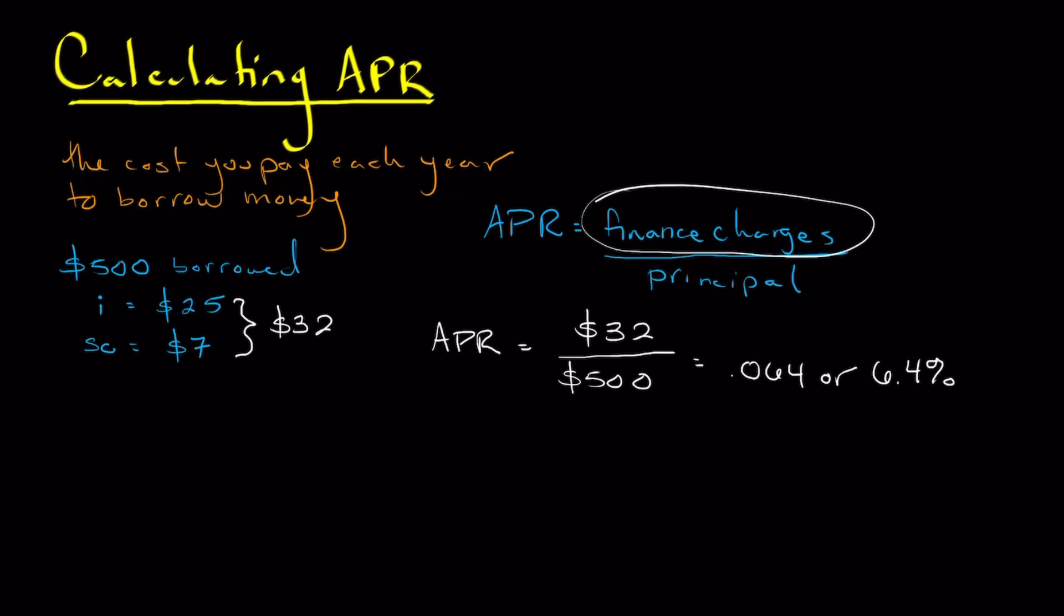If we were just to go off the interest rate, that would simply be the $25 that we paid divided by 500. So in that case, we're really only looking at 0.05 or 5%. But this isn't really an accurate representation of what our real cost is because we do have service charges and other things.